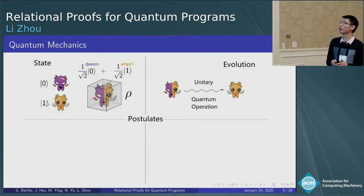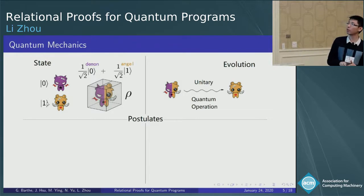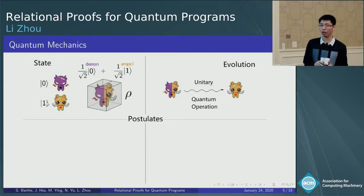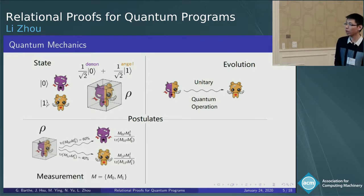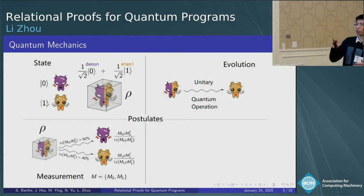Next is about evolution. The evolution of an isolated quantum system is described by the unitary transformation, and for an open system, which may interact with the environment, we use quantum operation to describe it.